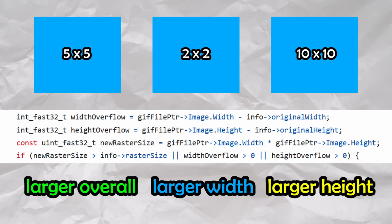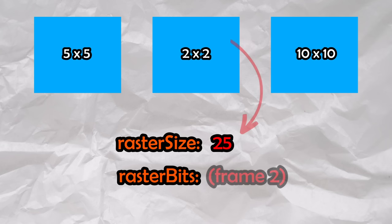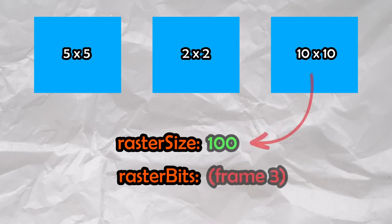For example, if a GIF has a first frame of size 5x5 and the next frame is 2x2, the buffer would not need to be reallocated, as the reallocation condition is not met. If the next frame after that is 10x10, the buffer would need to be reallocated.